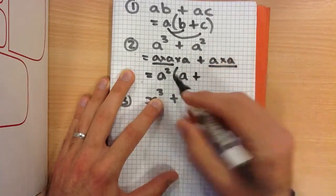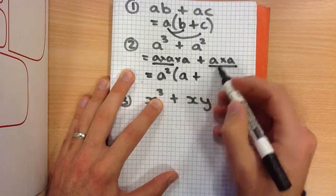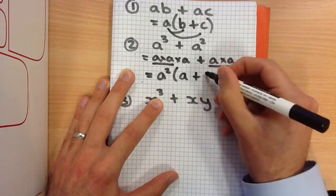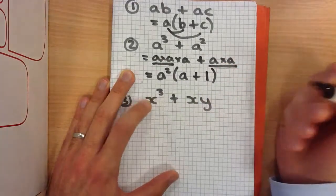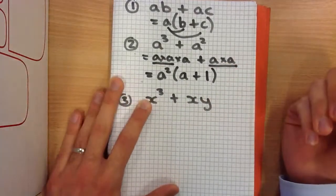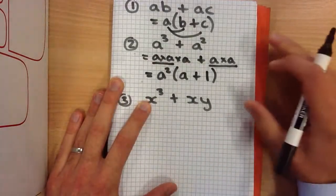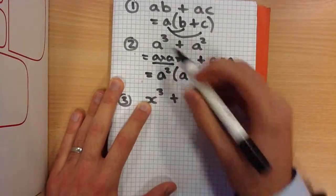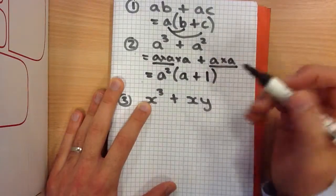And then what do I multiply A squared by to get A squared? That's just got to be 1. You can expand it in your exam to check you've got the right answer: A squared times A is A cubed, and A squared times 1 is A squared.